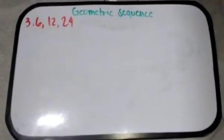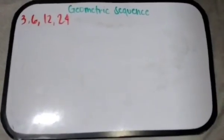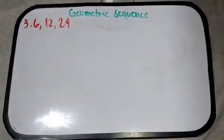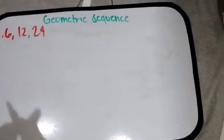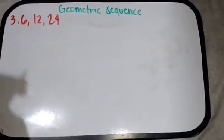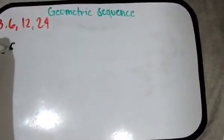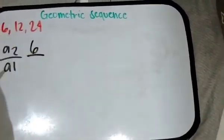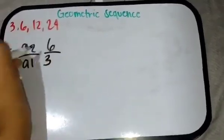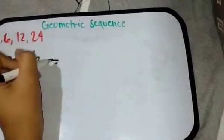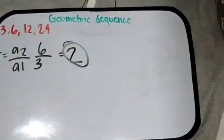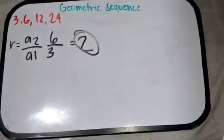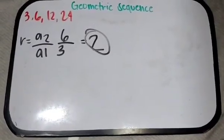So ngayon, tuturuan namin kayo kung paano mag-solve gamit ang geometric sequence. At ito ang example ng geometric sequence. To solve for the ratio, kailangan natin i-divide ang second term at first term. Second term is 6 and the first term is 3. So, 6 divided by 3 is 2. Kaya, 2 ang common ratio ng geometric sequence na ito.